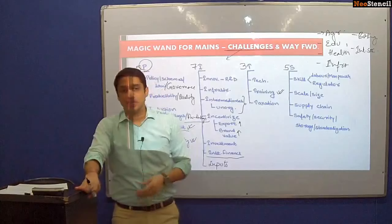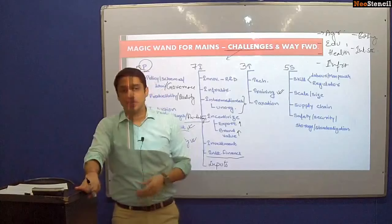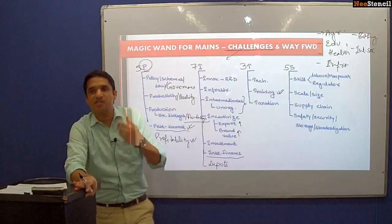The third T is taxation — whether agriculture should be taxed or not is a question because there is some misuse of agricultural income by food processing industries. Then we have the 5 S's — the first S is related to skill.